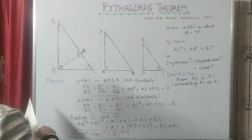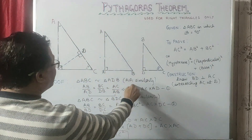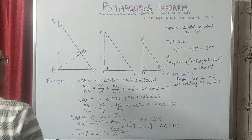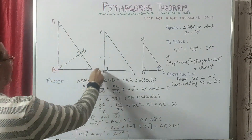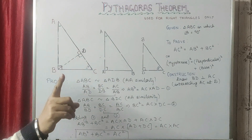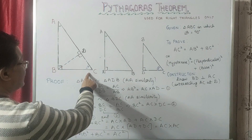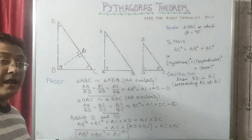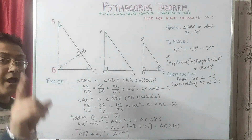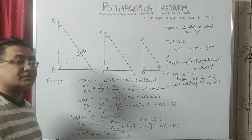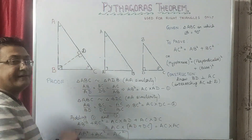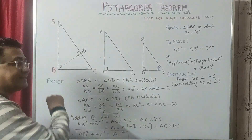Because they have angle-angle similarity — angle A is the same and angle B is 90 degrees, angle D is 90 degrees — automatically angle C will equal angle D as well. If you're unsure why, remember that the sum of all three angles in a triangle is 180 degrees.